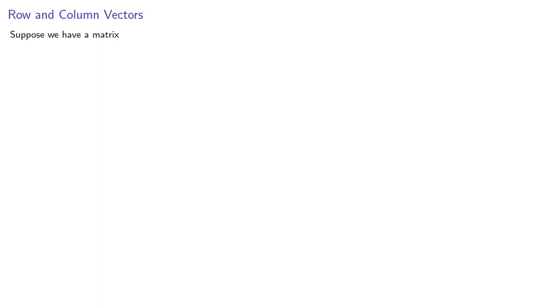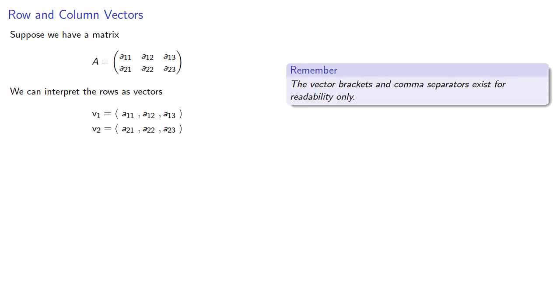The transpose doesn't have an obvious interpretation as a linear transformation, but it does turn out to be useful notationally. Suppose we have a matrix. We can interpret the rows as vectors. For example, V1 are the entries in the first row, and V2 are the entries in the second row. Remember, the vector brackets and comma separators exist for readability only. All that we require for a vector is it be an ordered tuple of field entries.